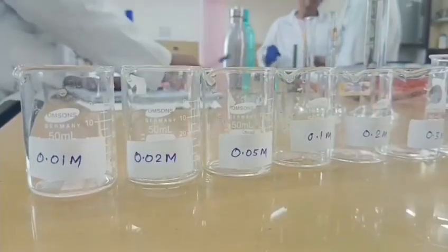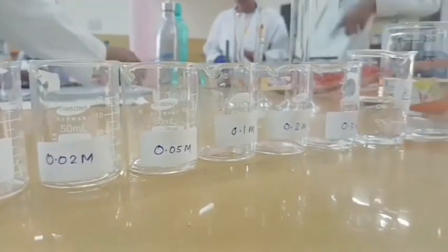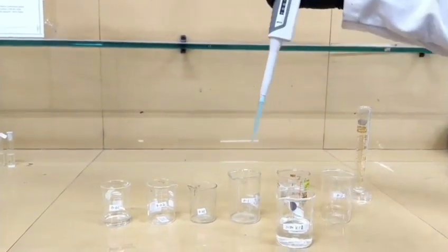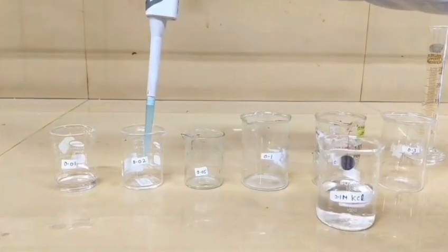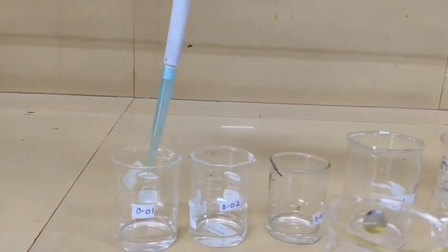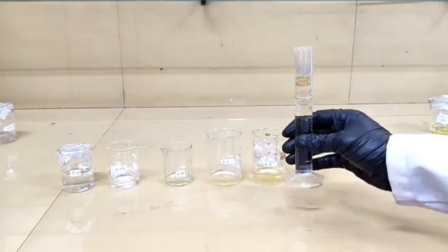Now we move to the dilution part. For dilution we need to take 0.01 molar, 0.02 molar, 0.05 molar, 0.1 molar, 0.2 molar, and 0.3 molar. The quantities to take in the micropipette I have already mentioned in my previous slide.